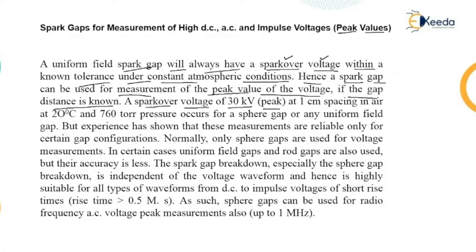Let us consider a simple example: a spark over voltage of 30 kilovolts peak at 1 centimeter spacing. The value of the electric field is 30 kilovolts per centimeter, since electric field is voltage divided by distance. Therefore the spark over voltage is 30 kilovolts for a gap of 1 centimeter at atmospheric conditions of 20 degrees Celsius temperature and 760 torr pressure.